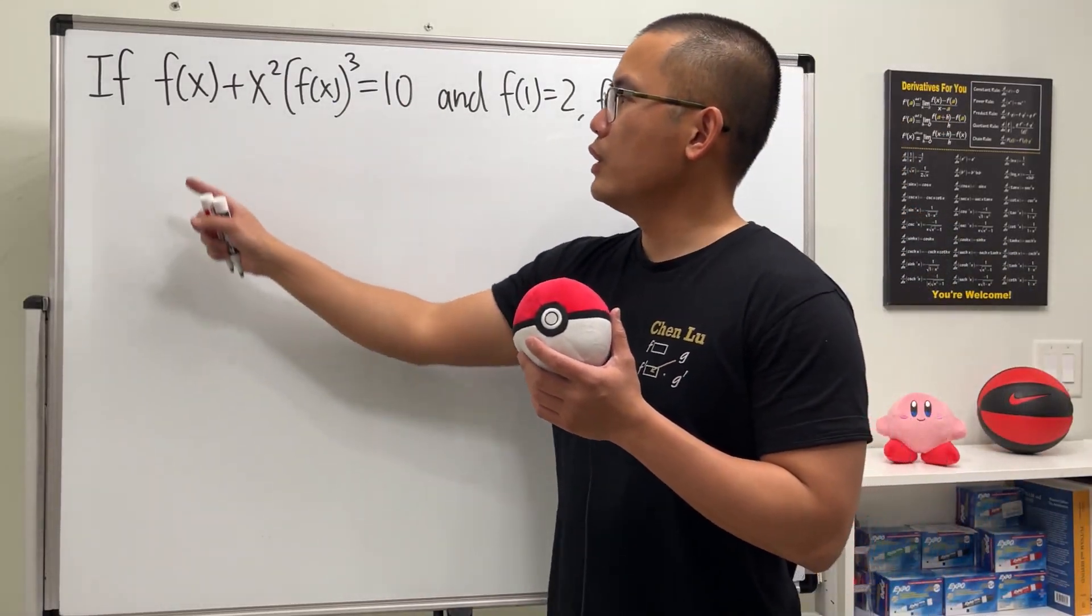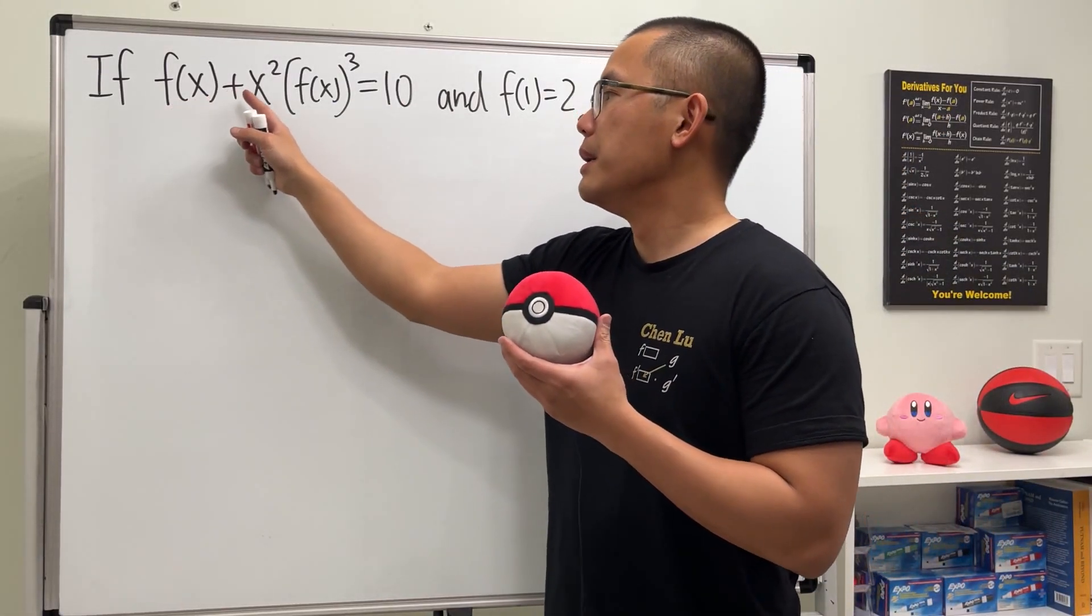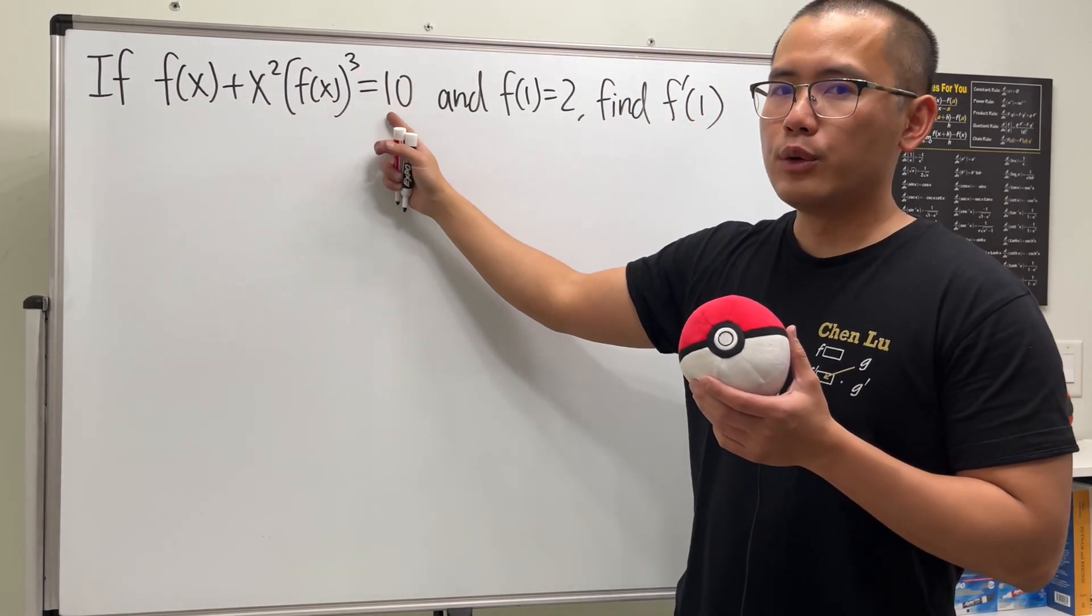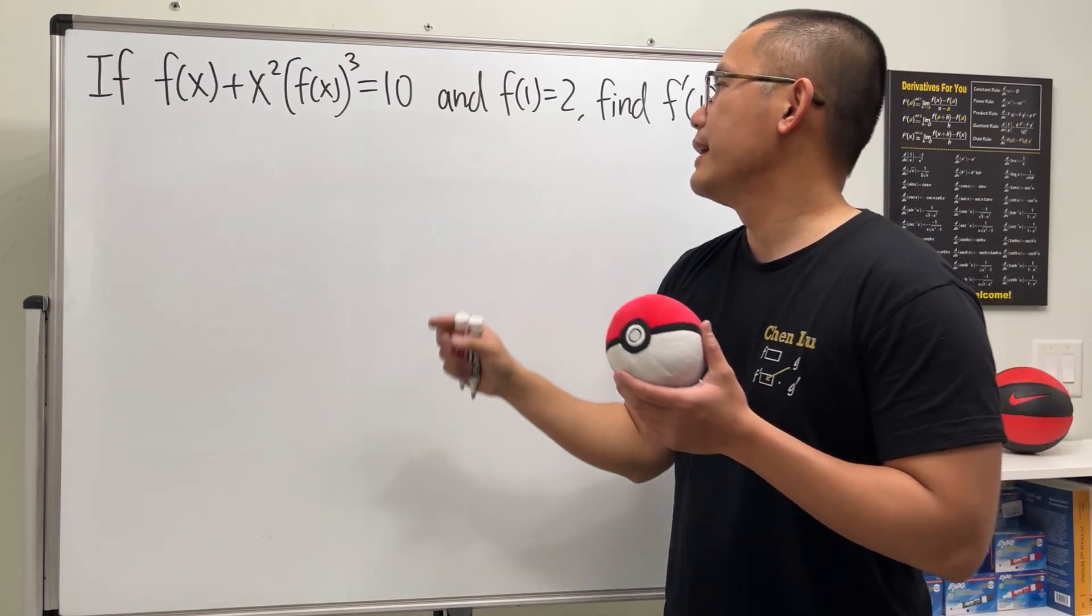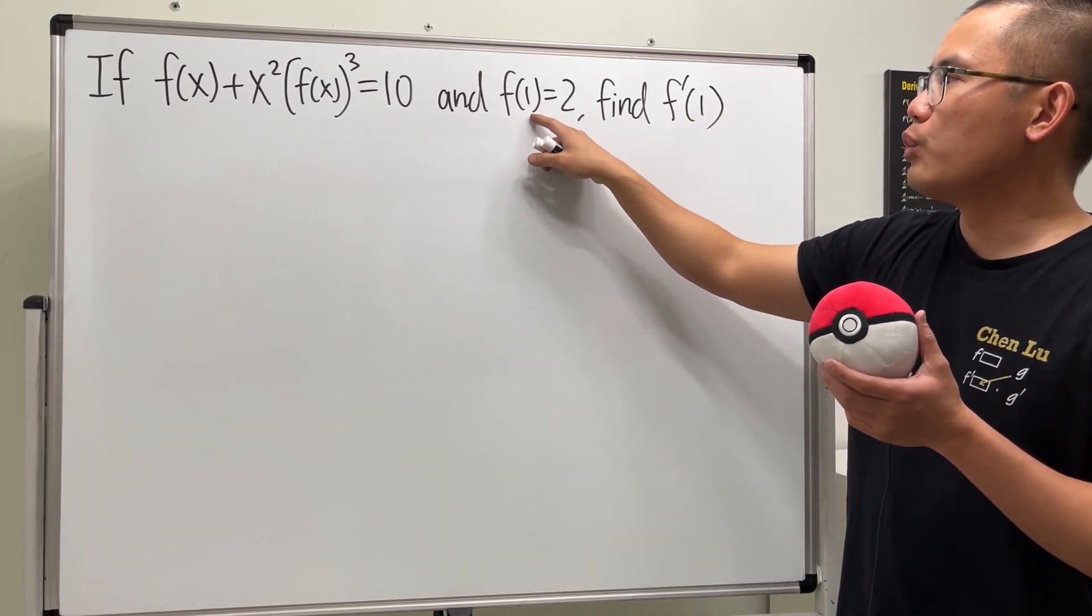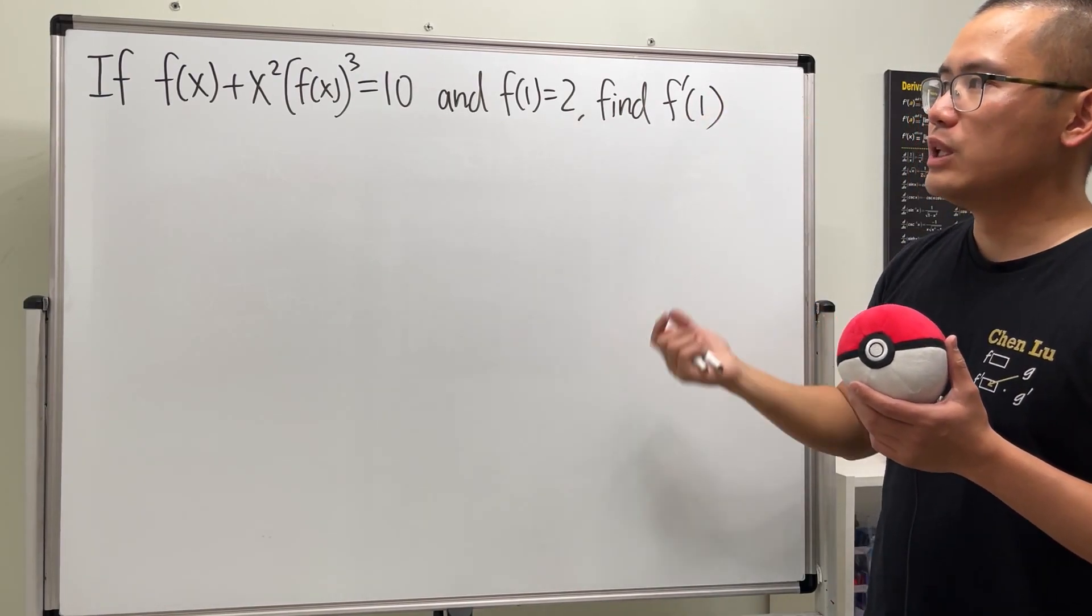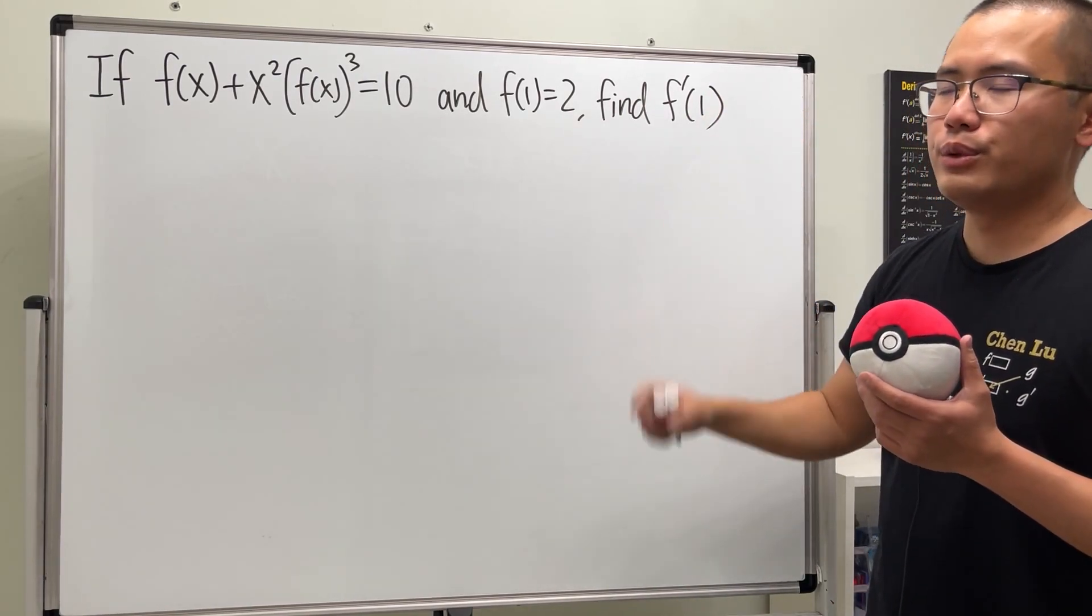Alright, here we are given this equation. We have some function f of x plus x squared times the function to the third power, and all together we know this is equal to 10. And we also know that f of 1 is equal to 2, and our goal is to find out f prime of 1, namely the derivative of the function when x is equal to 1.